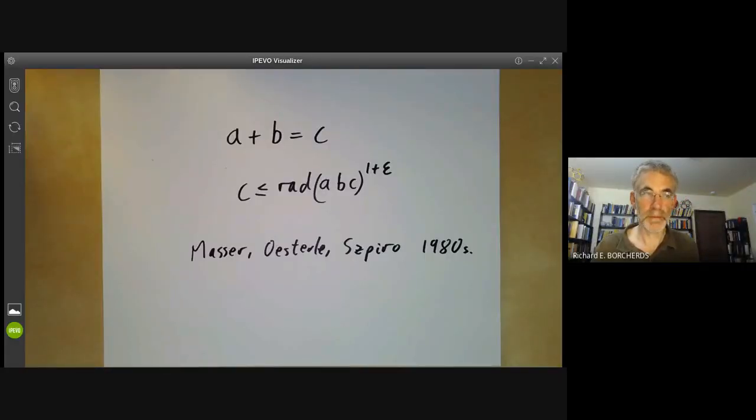So this is an undergraduate mathematics talk on the ABC conjecture. If anybody has come here wanting to know whether or not Mochizuki has proved the ABC conjecture, the answer is I don't know and I'm not qualified to say what this talk is going to be about.